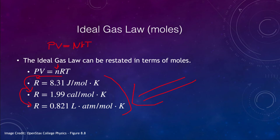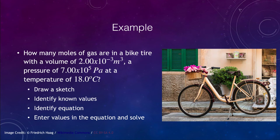Let's go through one example looking at a bike tire. We want to find how many moles of gas are in a bike tire if it has a volume of 2 times 10 to the negative third cubic meters, a pressure of 7 times 10 to the fifth pascals, and a temperature of 18 degrees Celsius.